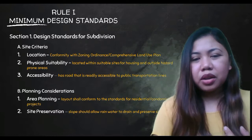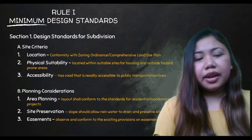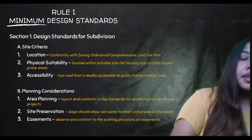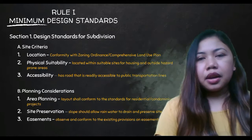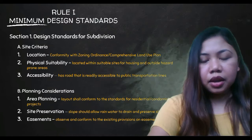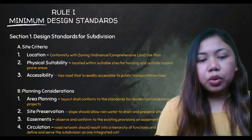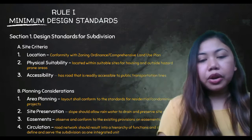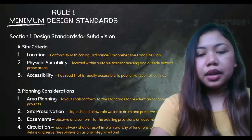If you do not preserve the natural slope and assets, your development becomes more expensive and you harm the environment. Third are easements — observe and conform to existing provisions on easements such as drainage, water lines, and power supplies. Fourth is circulation — the subdivision should follow a road network hierarchy with major and minor roads, serving the subdivision as an integrated unit.